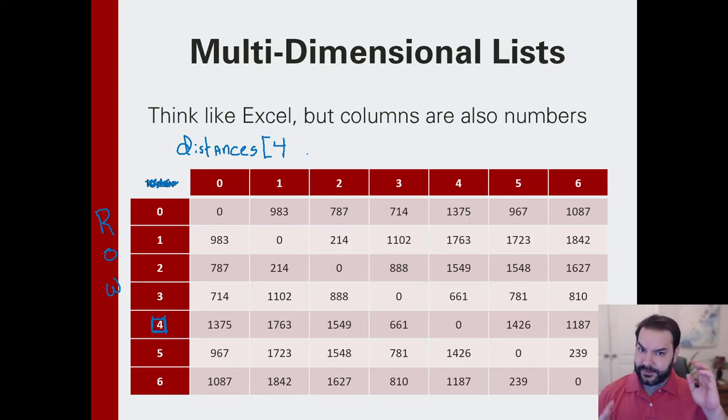Now, this is where the headaches start to begin. How would I reference, say, for example, I want to look at this number right here, 1549. So, how would I get there? Well, I can see that, yes, it is, in fact, the two column. But, how would I code that out?